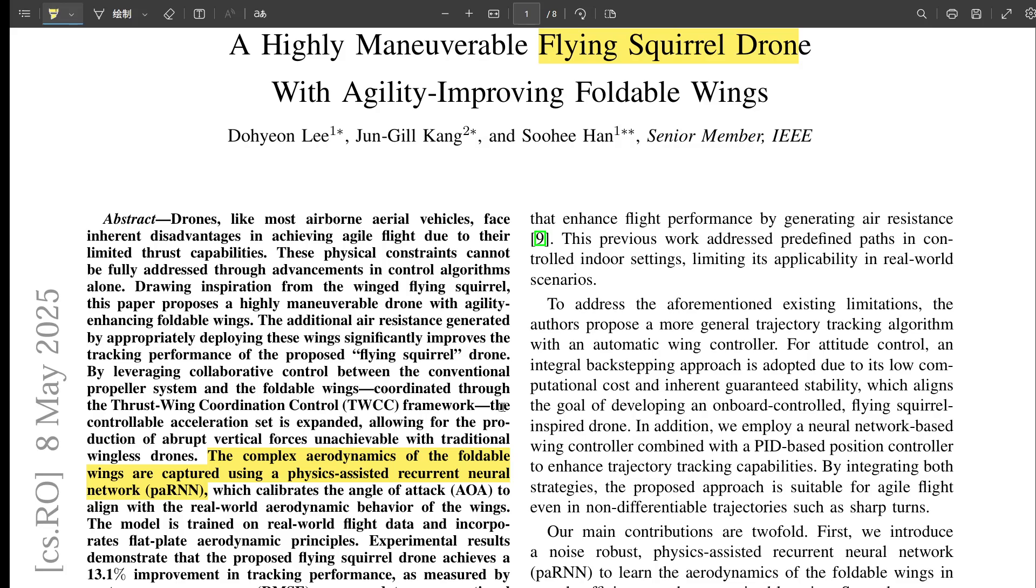Okay, so let's get into this because the research we're looking at today has this really clever workaround. We're diving into a drone design that takes its cues straight from nature, specifically the flying squirrel. The core idea is basically equipping a drone with foldable wings to seriously boost its maneuverability, its biomimicry, but aimed at fundamentally rethinking drone movement.